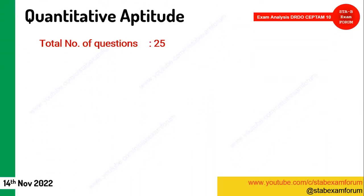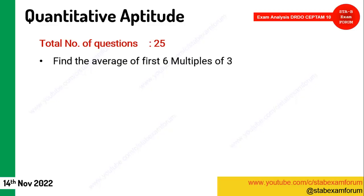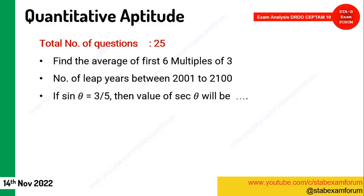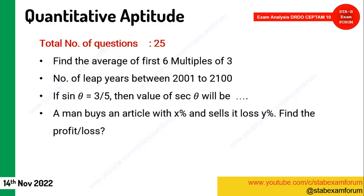Coming to Quantitative Aptitude — again 20 to 25 questions. Trigonometry is coming in every shift. The first question: average of the first six multiples of three. Number of leap years between 2001 and 2100 — simple. One trigonometry question. One profit and loss question: if an article is bought with some profit percentage and sold at a loss percentage, what is the overall result — profit or loss?